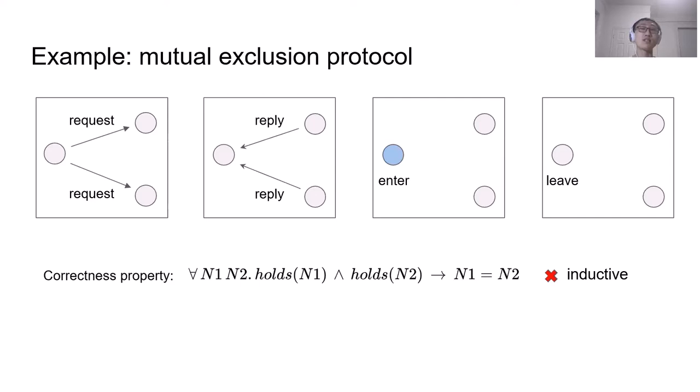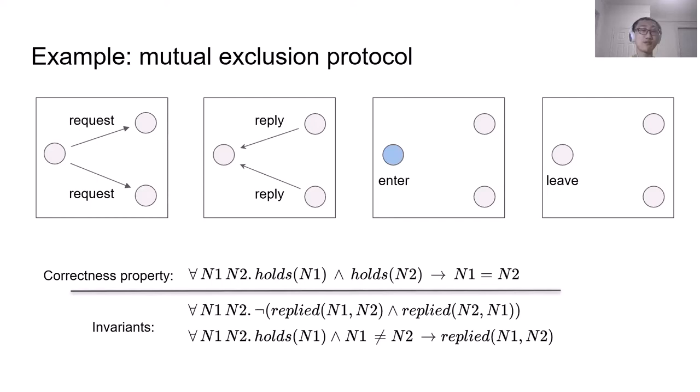Unfortunately, this correctness property is not inductive, and to make it inductive, we have to provide these two new invariants such that the conjunction of the property and the invariants is inductive. And then an SMT solver can prove the inductiveness and therefore prove the correctness of such a protocol. It is not a trivial task to find these invariants. Complex protocols may take many weeks for human experts to find the correct inductive invariants.